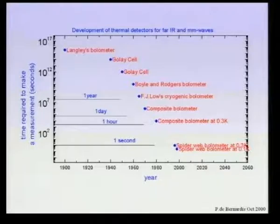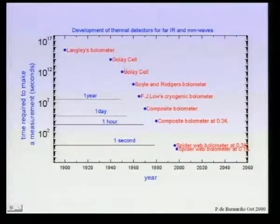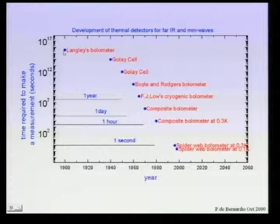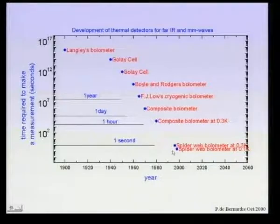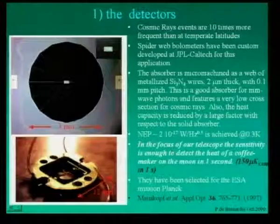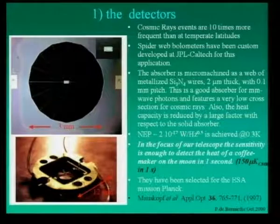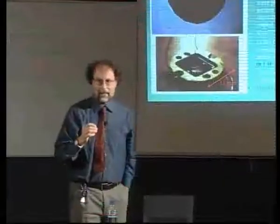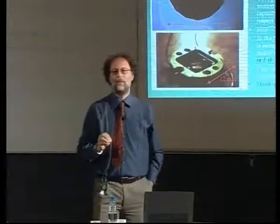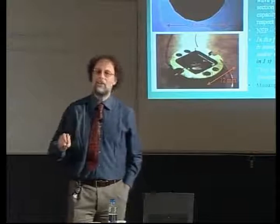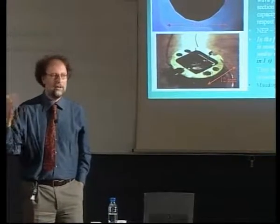These bolometers were invented long ago by Langley at the beginning of this century, and have since been improved enormously — what would have taken 10 to the 15 years at the time of Langley now takes about one second. That's why we can do this measurement; otherwise it would take more than the age of the universe. These particular detectors were developed at JPL/Caltech and have since been used for the Planck satellite — this is one of many examples where balloons are used to test technology later used on satellites.